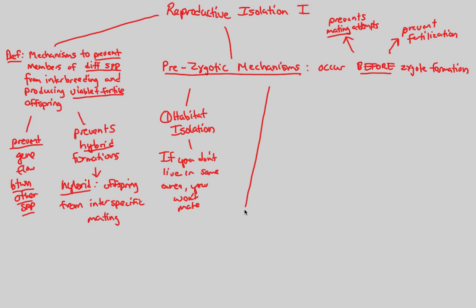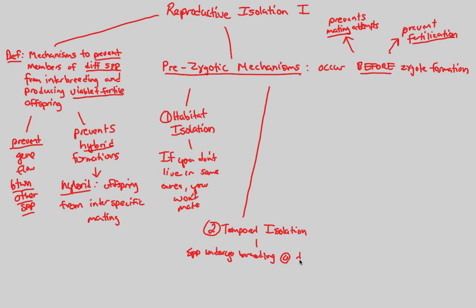The second prezygotic mechanism is temporal isolation. Again, these are prezygotic — we do not have fertilization or sperm and egg combining. Temporal refers to time. Temporal isolation is when two species undergo breeding at different times. The best way to understand this is through a real-life example.